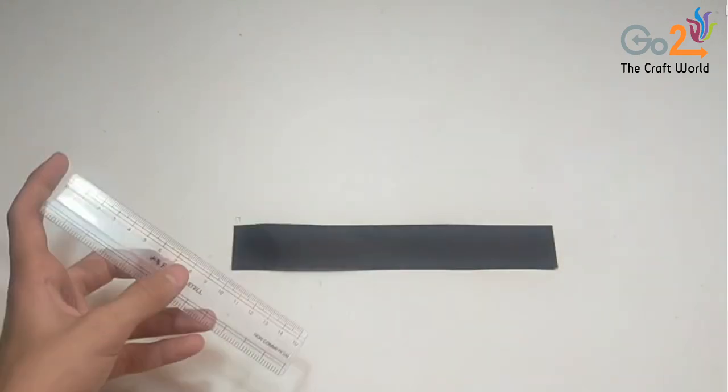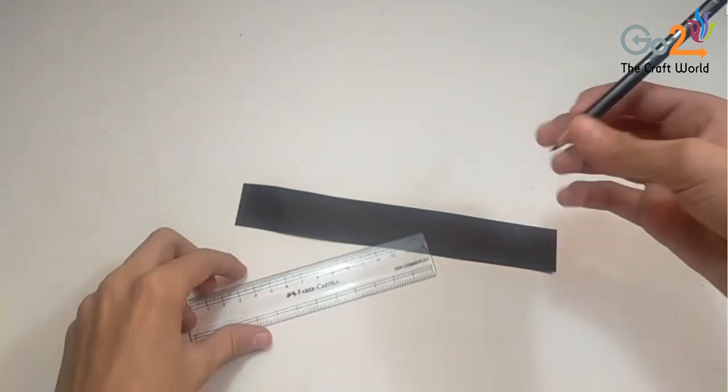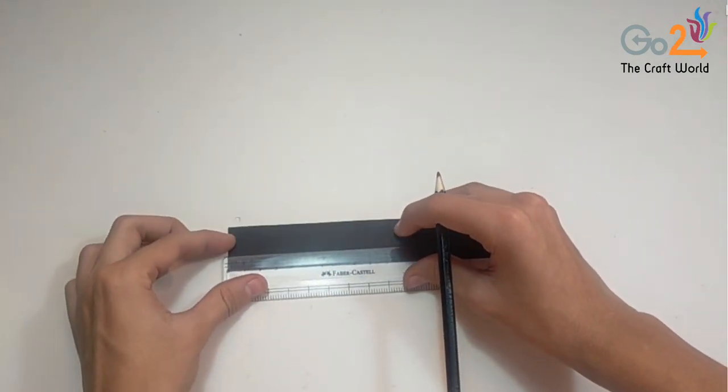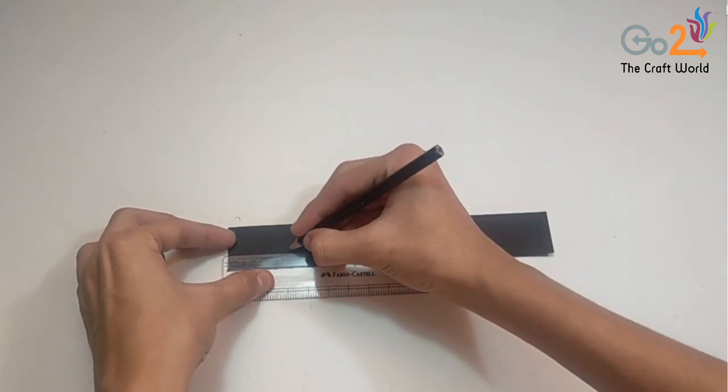I had already cut 30mm strips with the help of cutter and ruler, so now we will mark here 4 or 5 cm as per your requirement.